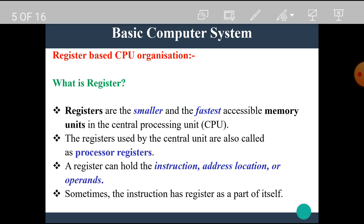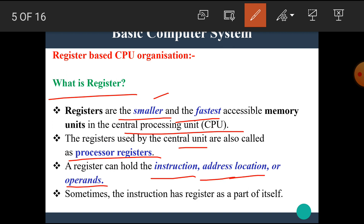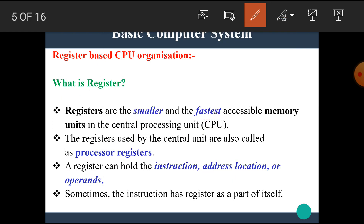Now let's see what a register is. Registers are the smaller and fastest accessible memory units in the central processing unit. These registers are used while running the program. The registers used by the central unit are also called processor registers. A register can hold the instruction, address, location, or operand during the execution of the program. Sometimes the instruction has a register as a part of itself.